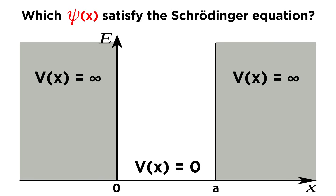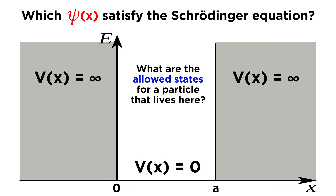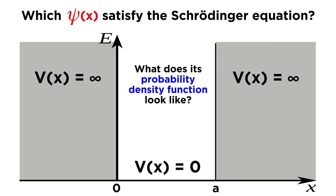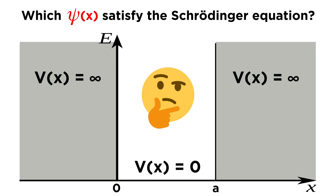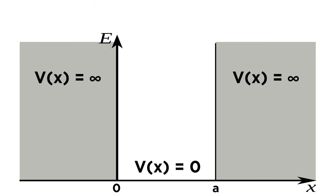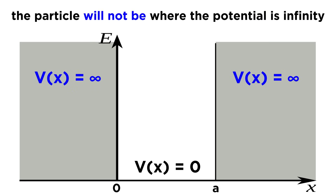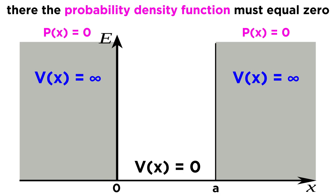We want to find the wave functions psi of x representing this particle, which satisfy the Schrödinger equation. This is the same as asking: what are the allowed states for a particle between these walls, what does its probability density function look like, and what are its allowed energies? The boundary conditions tell us right away that the particle will surely not be located wherever the potential is infinity, so the probability density function must equal zero in those regions.